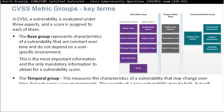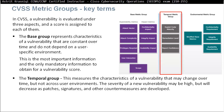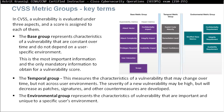The second group is called the temporal group. This measures the characteristics of a vulnerability that might change over time, but not across user environments. For example, the severity of a new vulnerability may be high, but later will decrease as patches, signatures, and other countermeasures are developed. The third group is called the environmental group and represents the characteristics of a vulnerability that are important and unique to a specific user environment.